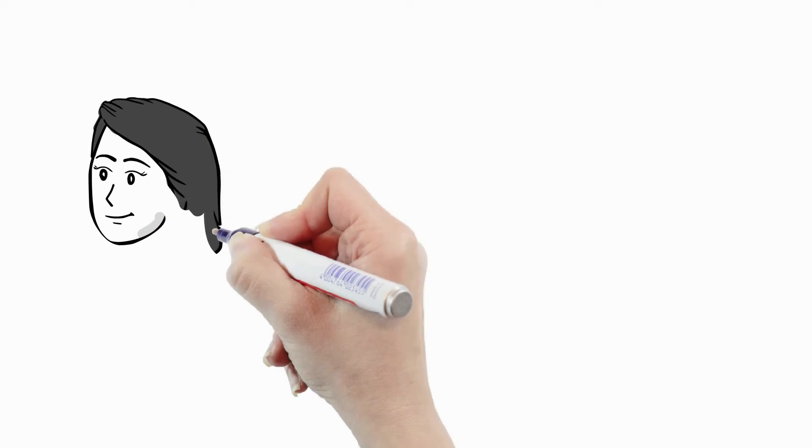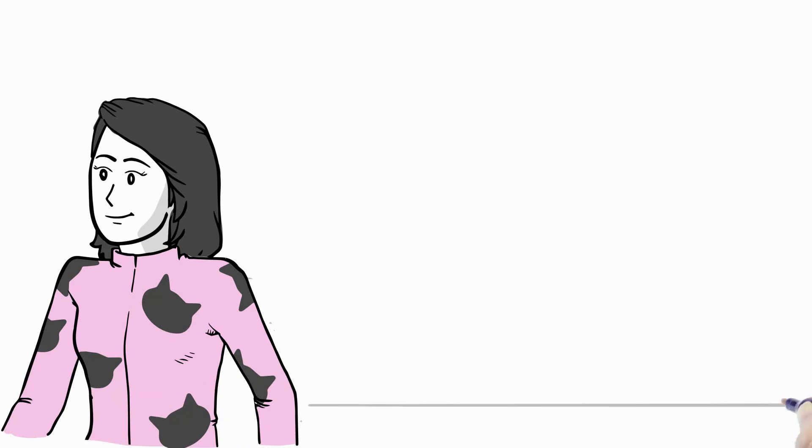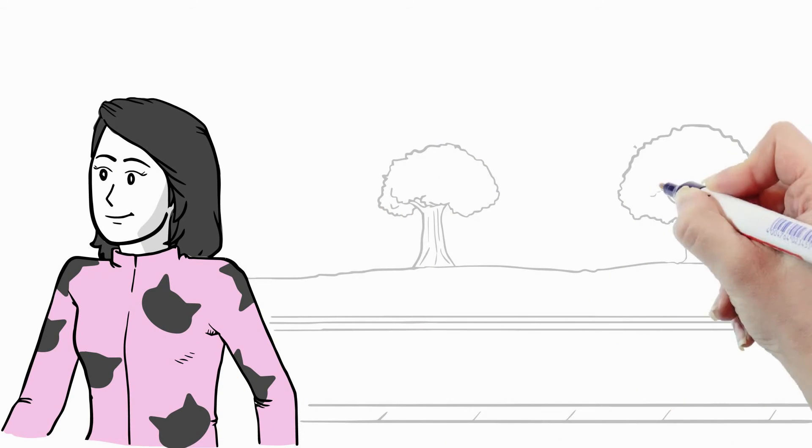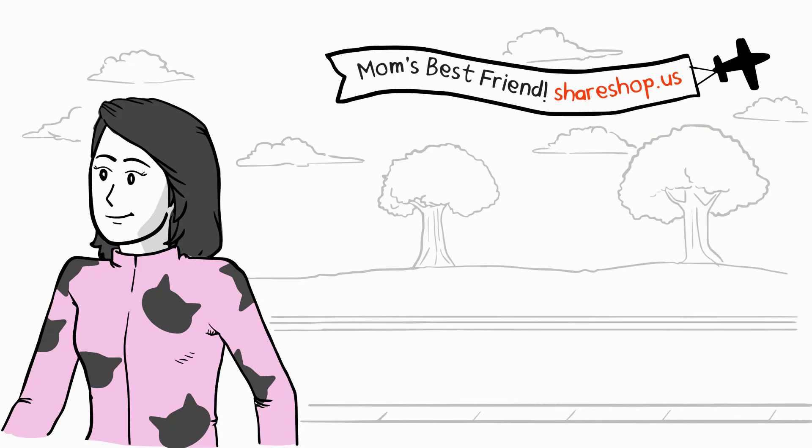Join ShareShop. All adult clothes are $10 each. All kids' clothes are $5 each. Post 10 items to join, then everything is $5 and $10 each, all year long. Sign up today. ShareShop.us